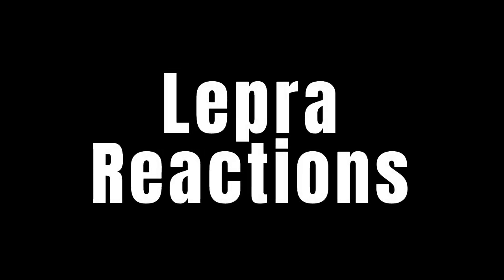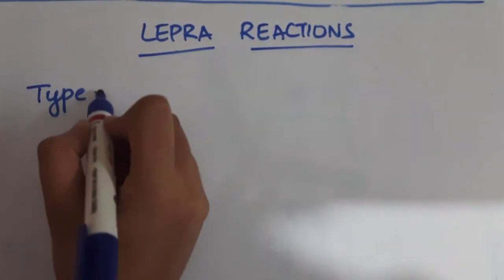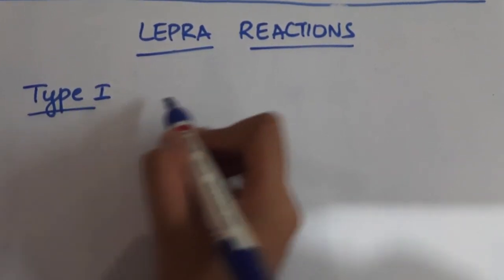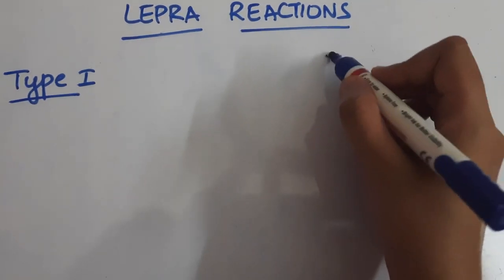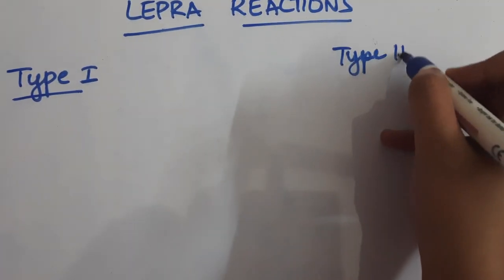Hello everyone, this video is about the types of reactions seen in leprosy. The reactions which are called lepra reactions can be classified into two types: type 1 lepra reaction and type 2 lepra reaction.